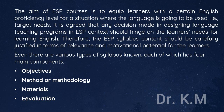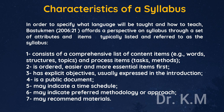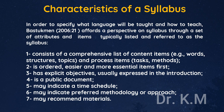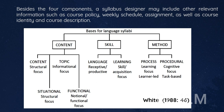There are various types of syllabus, each of which has four main components: Syllabus Objectives, Method or Methodology, Materials, and Evaluation. Barschkman, 2006, affords a perspective on syllabus through a set of attributes: it consists of a comprehensive list of content items (e.g., words, structures, topics) and process items (tasks, methods); it is ordered with easier and more essential items first; it has explicit objectives usually expressed in the introduction; it is a public document; it may indicate a time schedule, preferred methodology or approach, and may recommend materials. A syllabus designer may also include course policy, weekly schedule, assignments, course identity, and course description.